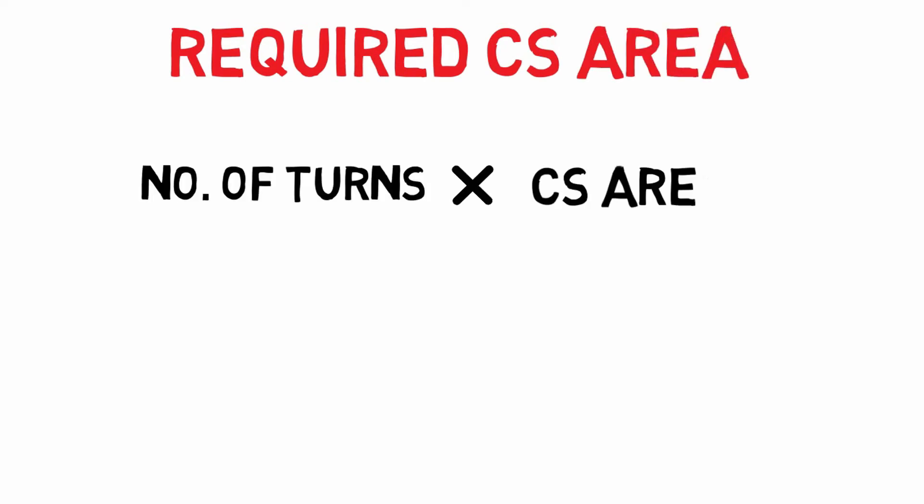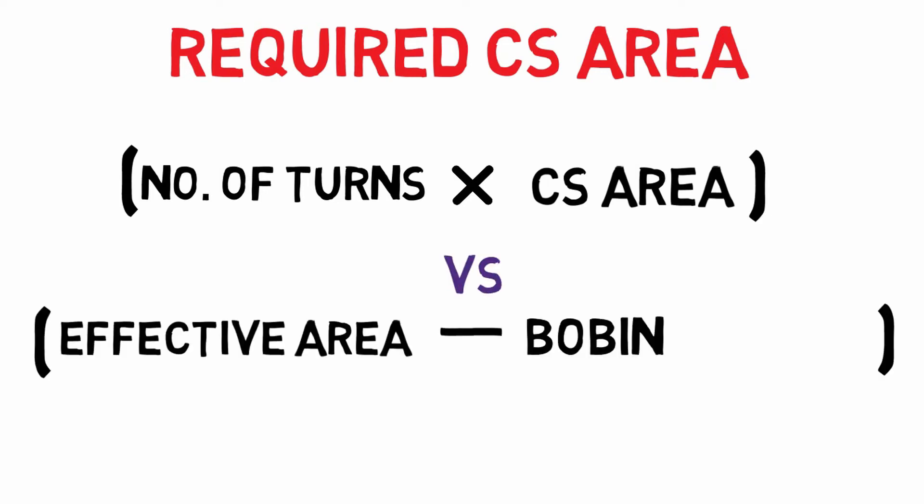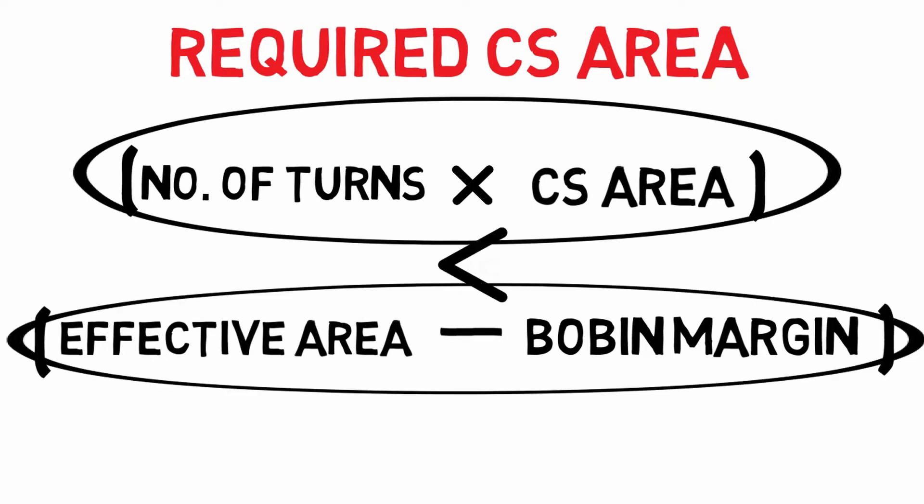To find it we need to compare the required cross-sectional area of the total wire, which is number of turns into cross-sectional area, with effective area of the core minus bobbin margin. Here we'll consider bobbin margin as 10 percent of the effective area of core. If this value is less than this value, then we can assume that wire will fit into bobbin.